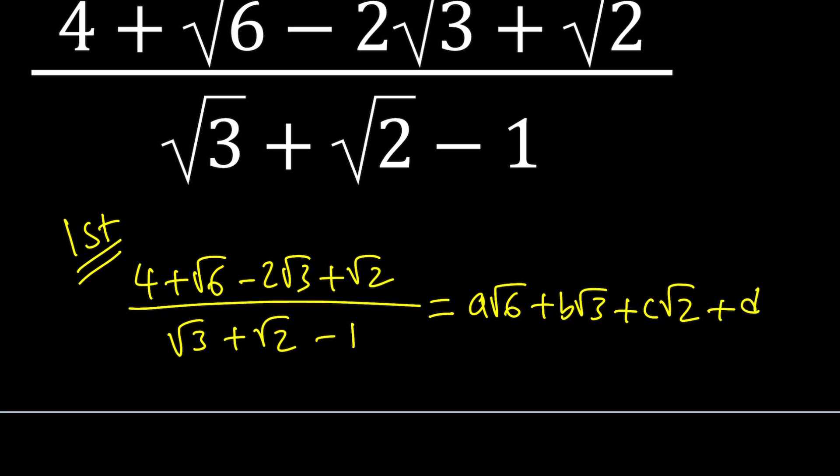Where A, B, C, D are rational numbers. So, my goal is to find the value of A, B, C, D by setting up a system of equations with four variables. Therefore, I need four equations.